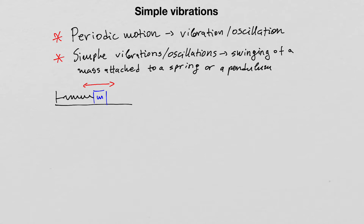Another possibility is that the mass is hanging on the spring vertically. If the mass is pulled down or pushed up and let go, then the mass will oscillate vertically up and down.